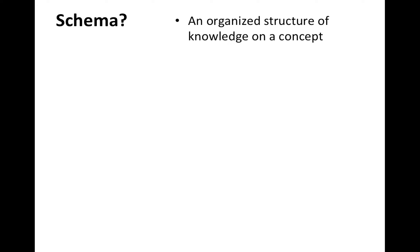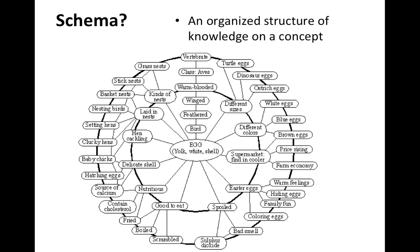What is schema? Schema is an organized structure of knowledge on a concept. This is an example of a schema on egg. It contains various information as to properties of egg and other related concepts. It contains simple knowledge about sizes and colors, and it extends to more advanced and complex concepts such as nutritional information.